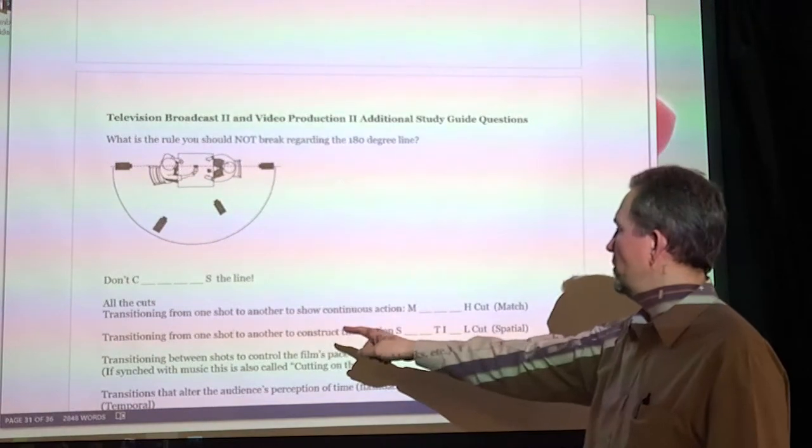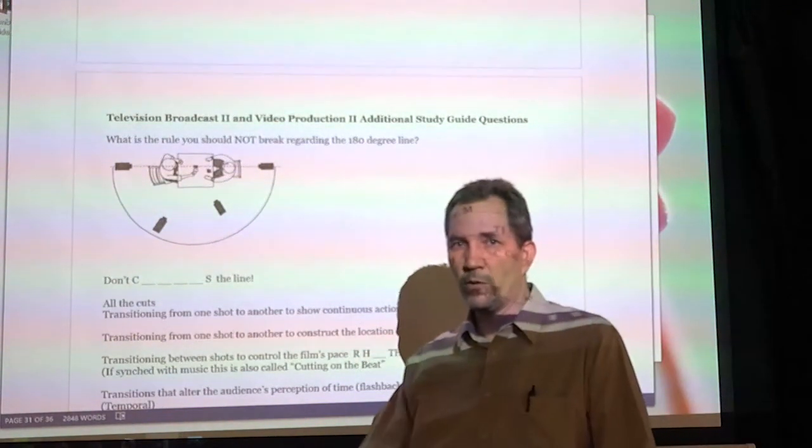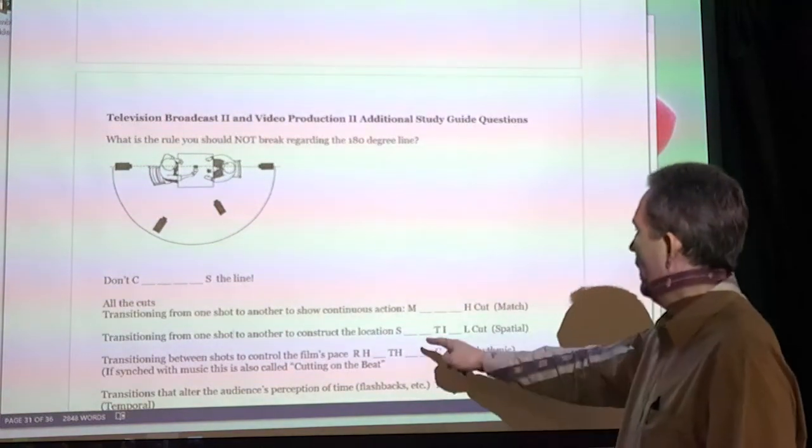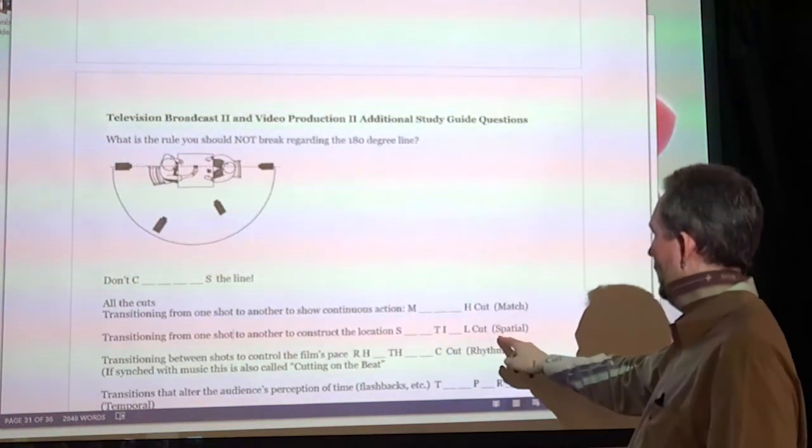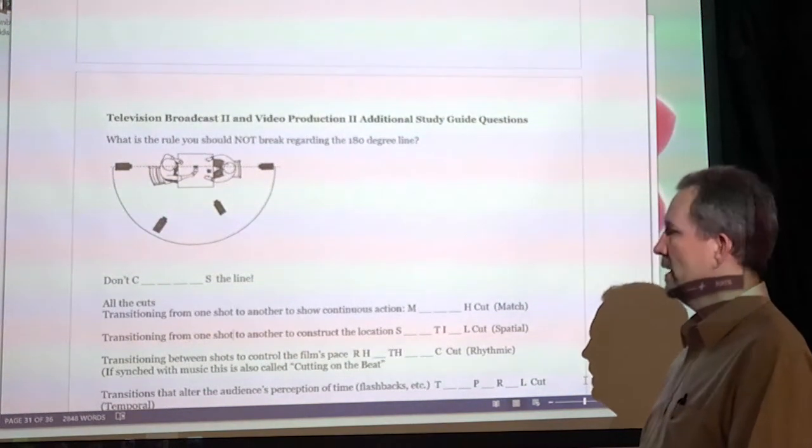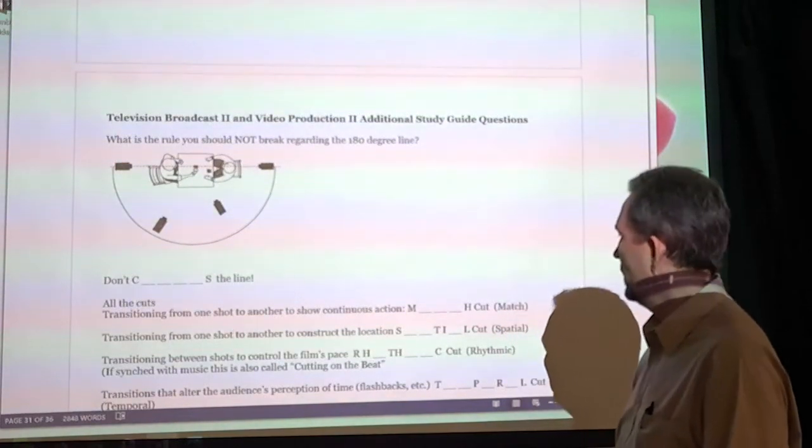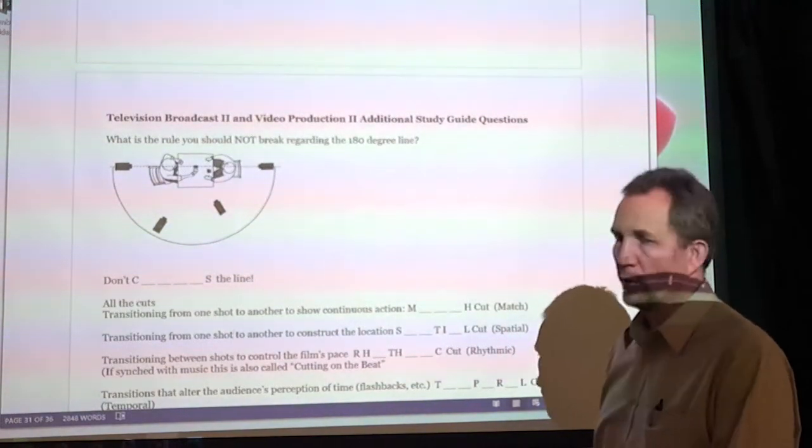Transitioning from one shot to another to construct the location. So this is where you're telling people what location you're in. They call that a spatial cut. Spelled weird. Should be spelled like outer space or you're in this space. But they put a T in there because it's English. It has to be hard. A spatial cut. And here's what it looks like.